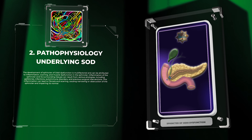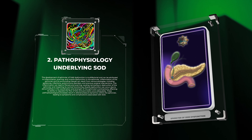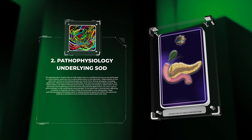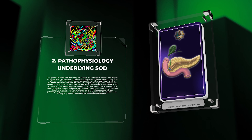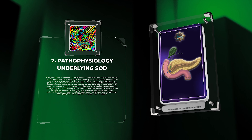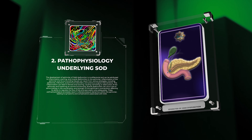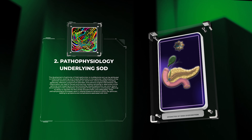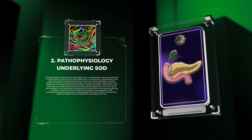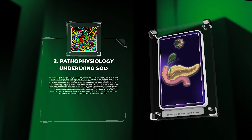The development of sphincter of Oddi dysfunction is multifactorial and can be attributed to inflammation, scarring, and muscle dysfunction in the sphincter. Inflammation can result from various etiologies, including gallstones, infections, autoimmune disorders, and previous surgical interventions, leading to fibrosis and scarring that causes narrowing or obstruction of the sphincter.